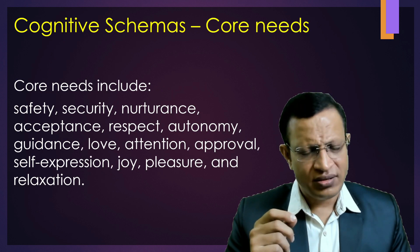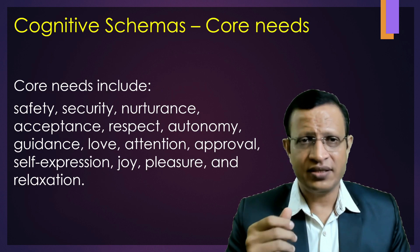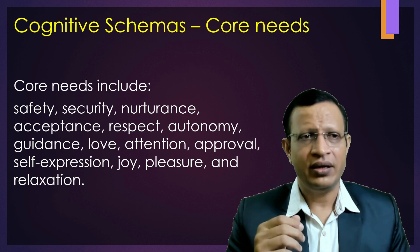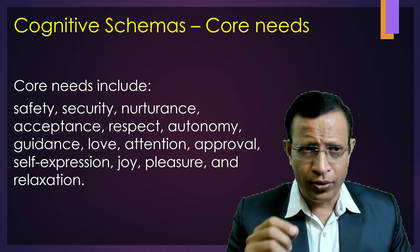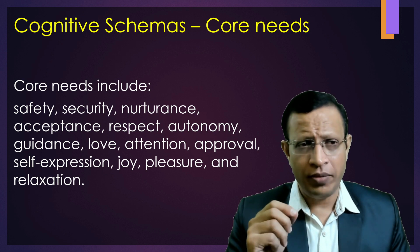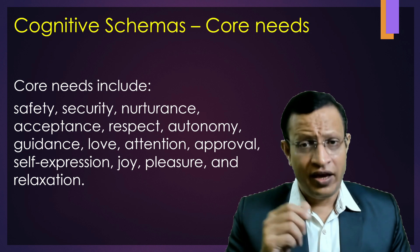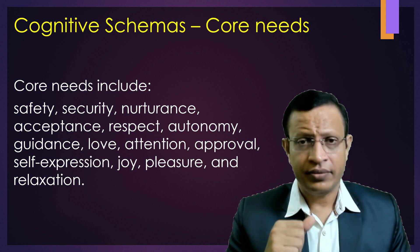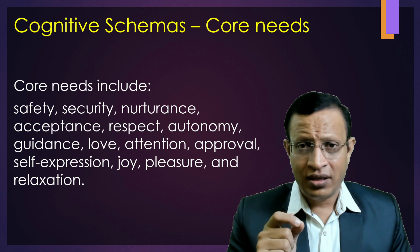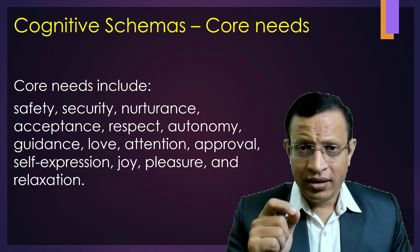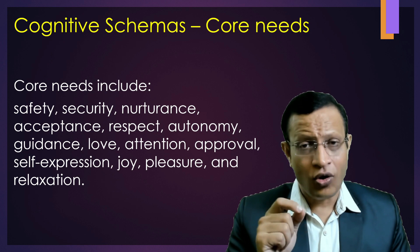Core needs include safety, security, nurturance, acceptance, respect, autonomy, guidance, love, attention, approval, self-expression, joy, pleasure and relaxation. These are required in childhood. If they are deprived, along with a traumatic event, the child starts interpreting events in a different way — these interpretations are called schemas. Traumatic events may include childhood abuse, sexual abuse, bullying, disaster, life events, criticism, and disciplining.